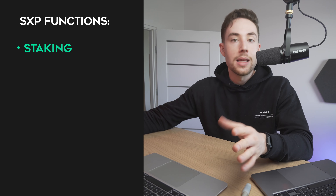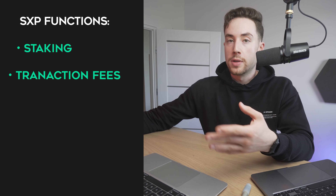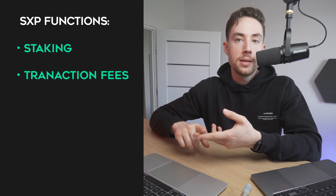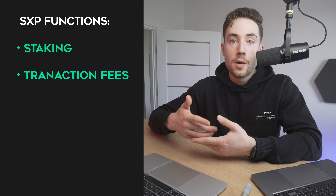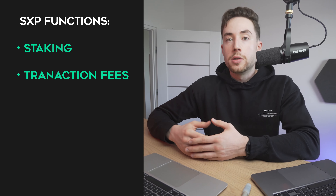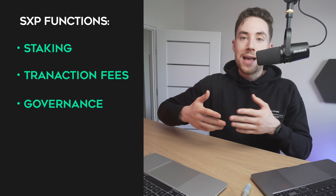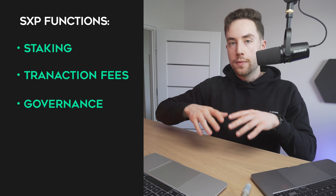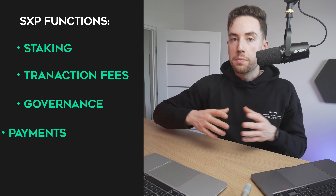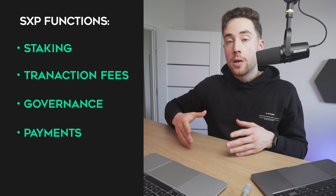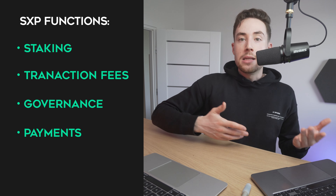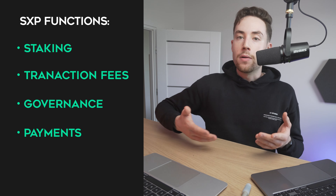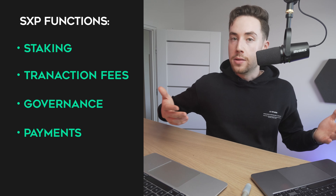SXP is used to perform the following functions. First, staking — SXP token holders can stake their tokens to secure the network and earn rewards. There are also transaction fees — SXP tokens can be used to pay transaction fees on the Solar blockchain, ensuring the network's smooth operation. Then there's governance — SXP token holders can participate in governance by proposing and voting on changes to the protocol. And finally, payment — Solar dApps utilize SXP tokens as the primary currency, providing inherent utility and value to the token.